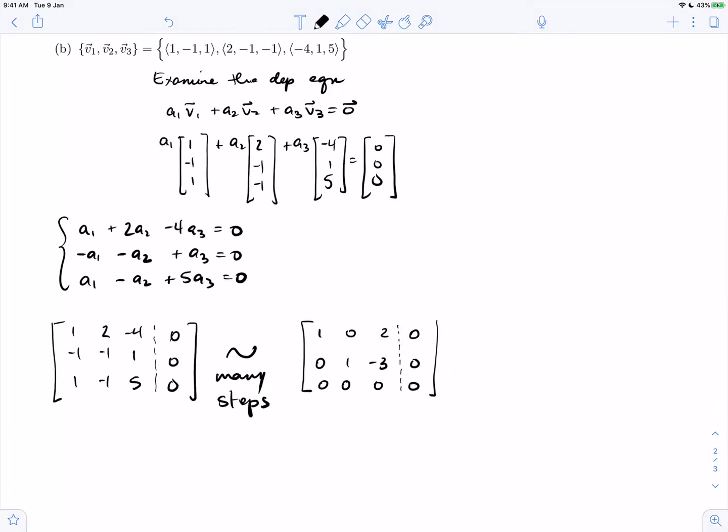We can see that we have a free variable. The system is consistent, it's homogeneous, and therefore we have infinitely many solutions. If there's infinitely many solutions, then necessarily there must be non-zero solutions. If there are non-zero solutions to this system, there are non-zero solutions to the dependence equation.